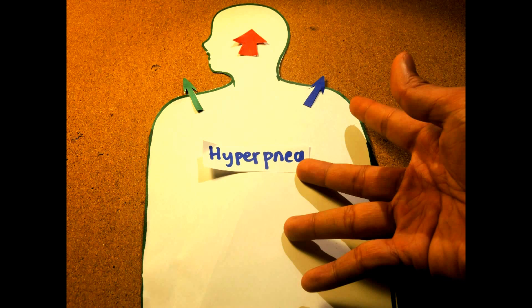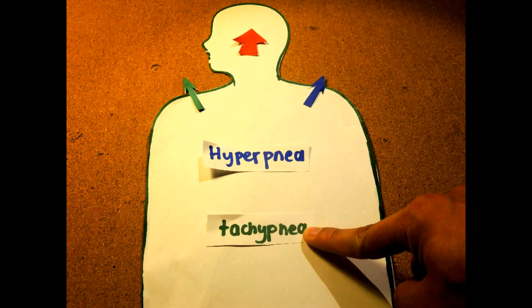Then we have tachypnea, which is a rapid breathing at a rate of 20 breaths per minute, higher than normal rates. There are also some examples of a decrease in breathing rates.